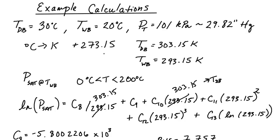Welcome back. In the last video we were calculating some psychometric properties for this given condition where we have a dry bulb temperature of 30 degrees centigrade, a wet bulb temperature of 20 degrees centigrade, and we had a total pressure of 101 kilopascals.